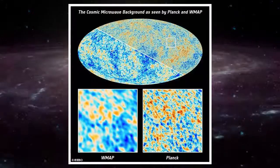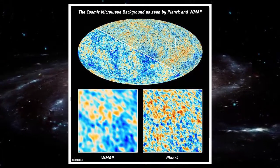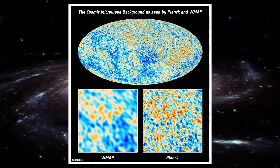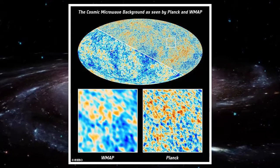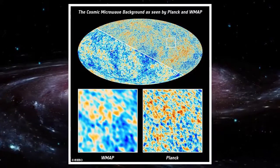Rather than the cold spot existing as a single massive supervoid, the new study suggests galaxies in the spot cluster around smaller voids that spread over the region like bubbles. But these clusters of galaxies cannot explain the cold spot's lower temperature.